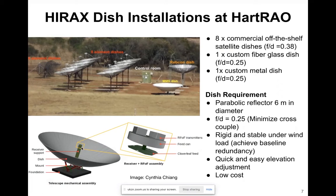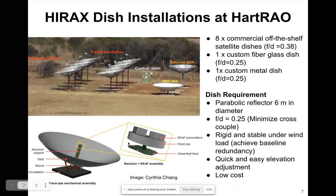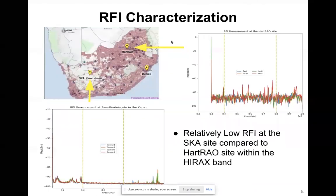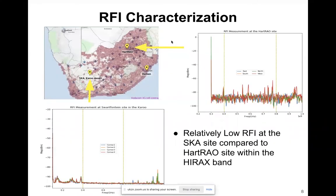This is the front-end electronics of IRAQS. We have the RFoF fiber transmitters. The feed circularizes our beam and also minimizes crosstalk between neighboring elements, which is important since the BAO signals we're looking at are very weak.